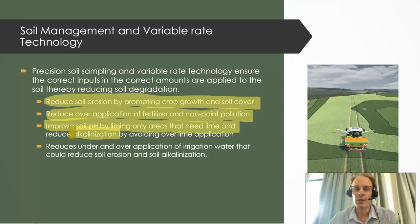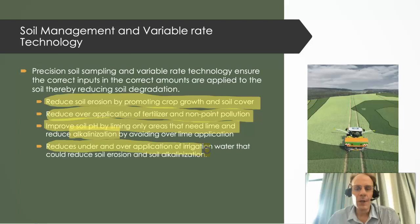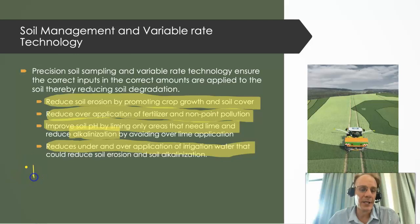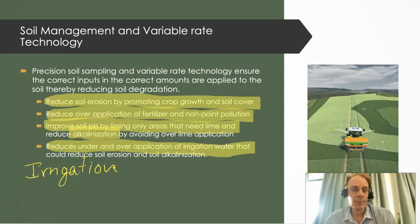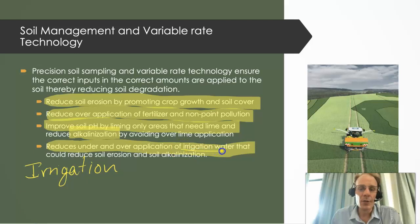Another benefit of variable rate technology is that we can apply it to irrigation, irrigating the right amount of water. This system allows the irrigation equipment to change the rate of water being applied to the soil, so that the correct amount of irrigation water is applied to the correct location in the field.